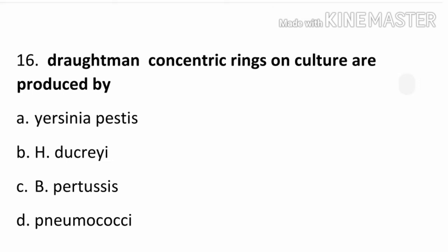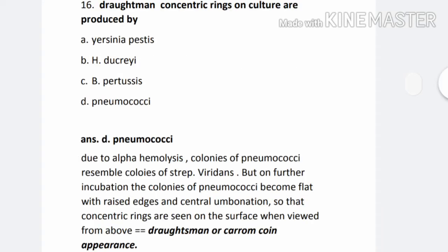Question number 16. Draughtman concentric rings on culture are produced by: Option A. Yersinia pestis, Option B. H. ducreyi, Option C. Bordetella pertussis, Option D. Pneumococci.